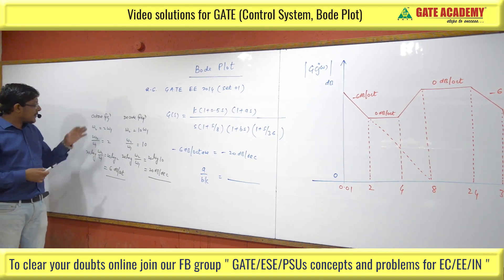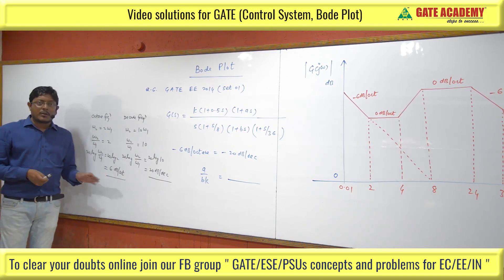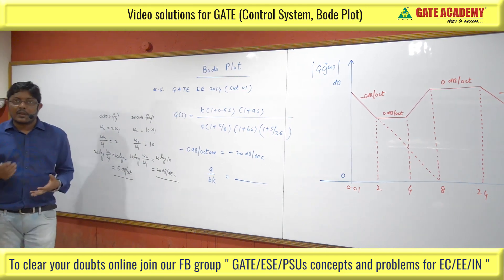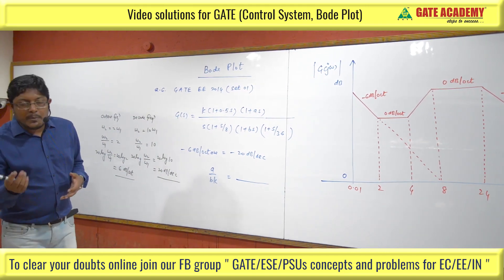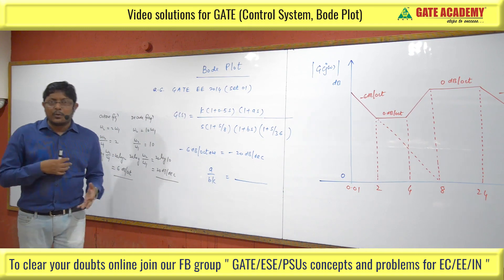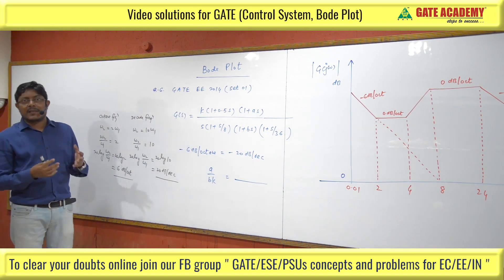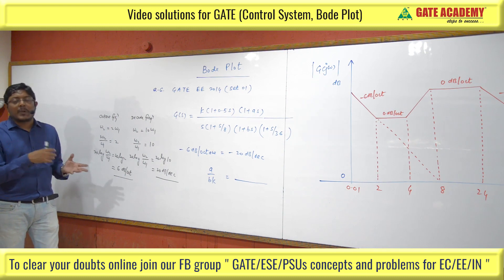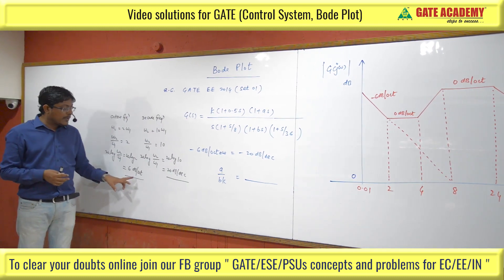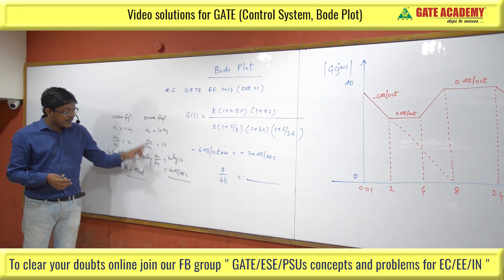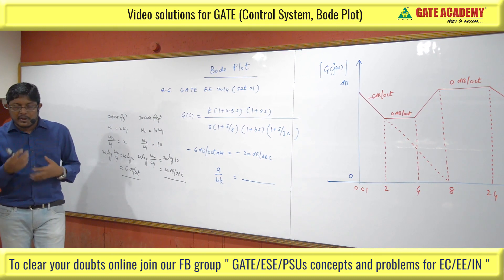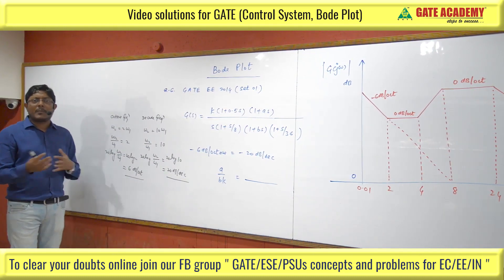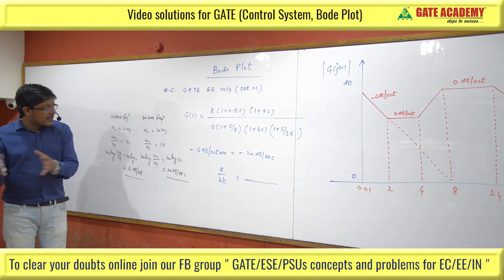When talking about octave frequency, it will be 6 dB per octave, minus 6, minus 12, minus 18 dB per octave. But in decade frequency, it will be 20, 40, 60, 80, 100, minus 20, minus 40, minus 60 dB per decade. The octave frequencies go 2 to 4, 4 to 8, because it doubles each octave.